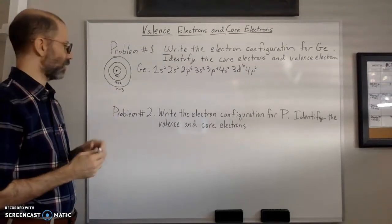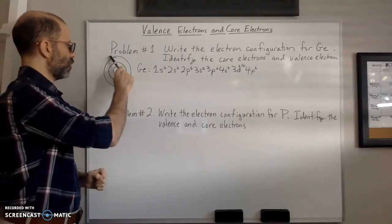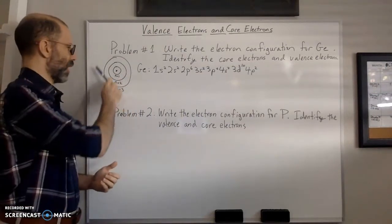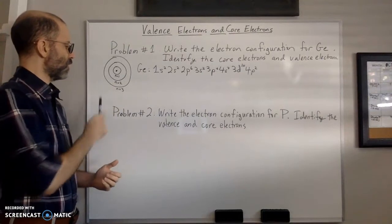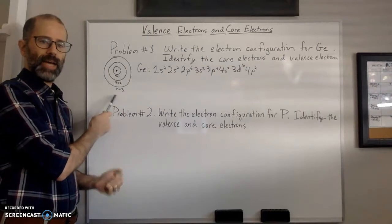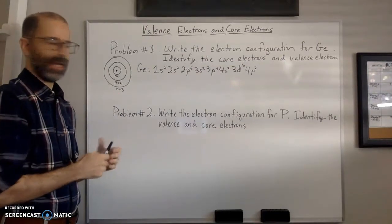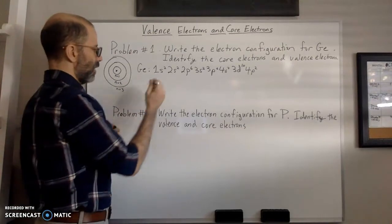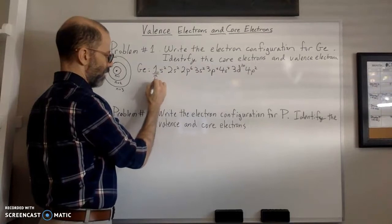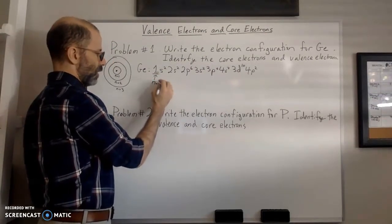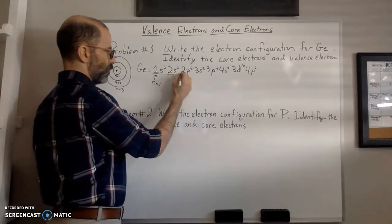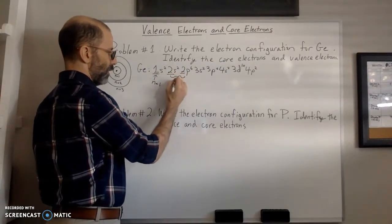The outermost shell is what we call the valence shell, and the electrons in that outermost shell are called valence electrons. The number of electrons in the outermost shell is the number of valence electrons. Valence electrons are identified by the largest n number — the number in front of your letter, which is your principal quantum energy level.